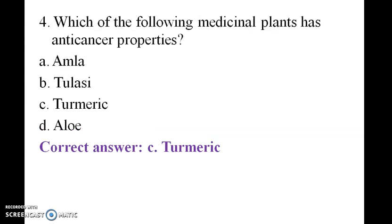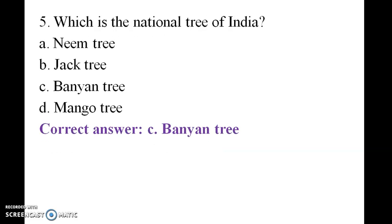Which of the following medicinal plants has anti-cancer properties: amla, tulasi, or turmeric? The answer is turmeric. Which is the national tree of India: neem tree, jack tree, or mango tree? The answer is banyan tree — the national tree of India.